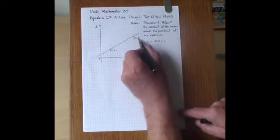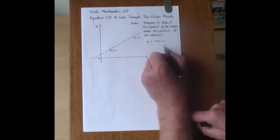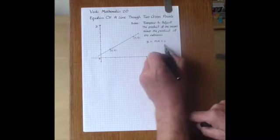The change in Y is 5 take away 2 which is 3, and the change in X is 7 take away 2 which is 5.